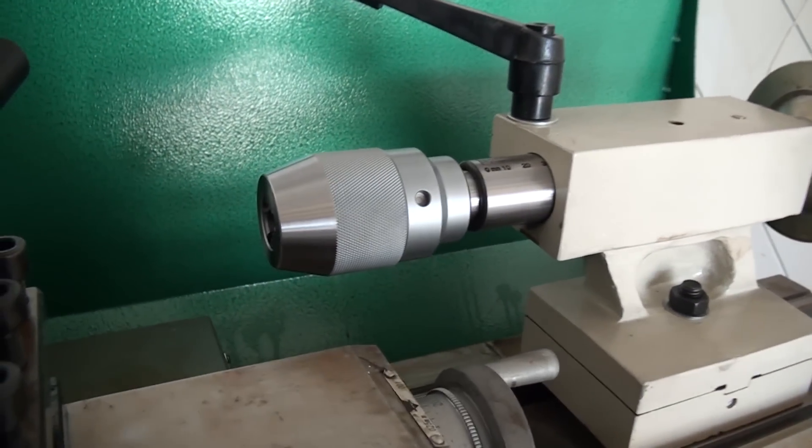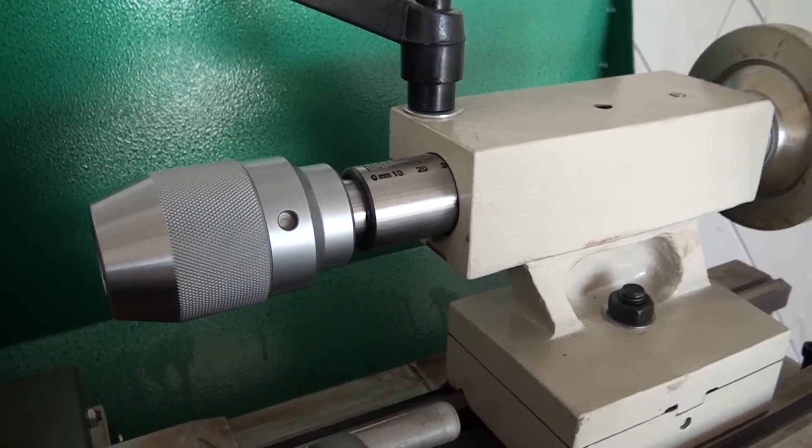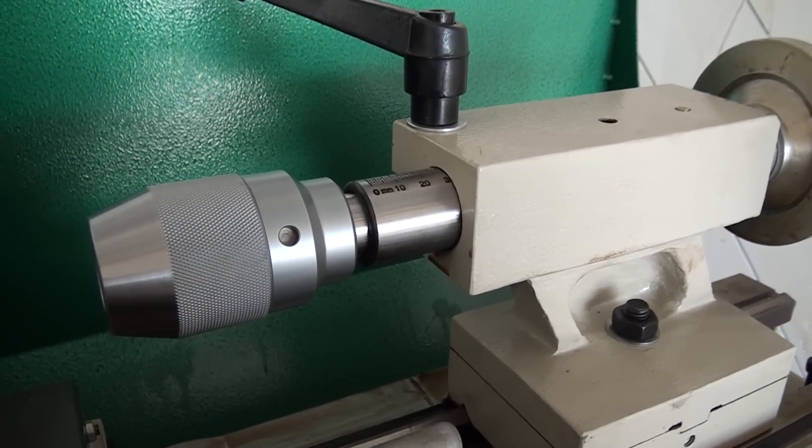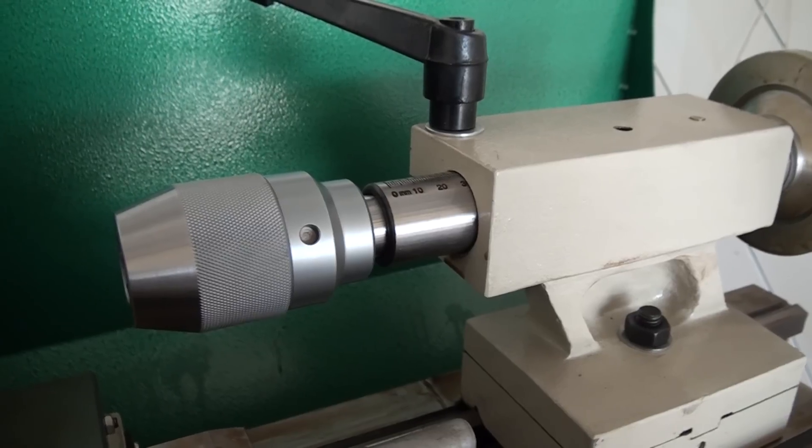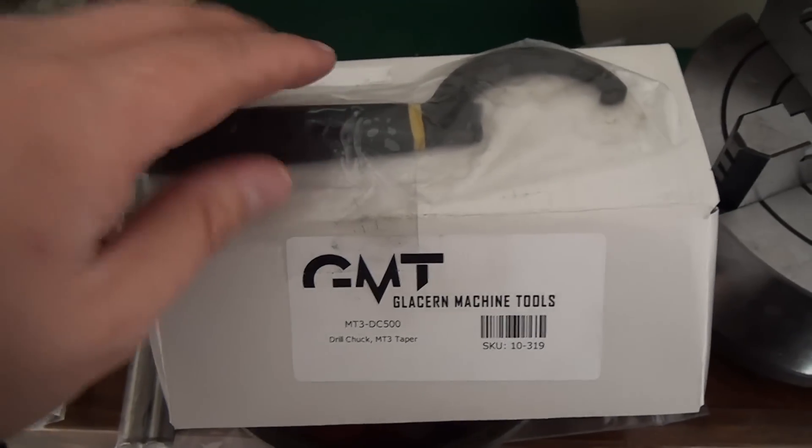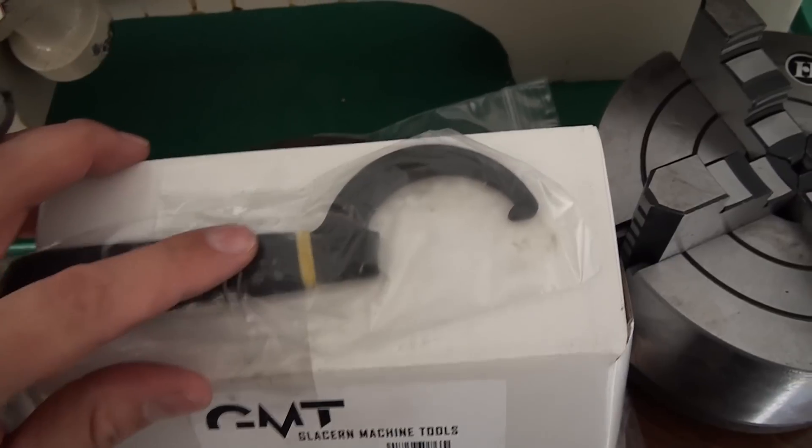If somebody could tell me, I would appreciate it, because I have no clue. Also with the Jacobs, you get this spanner wrench.